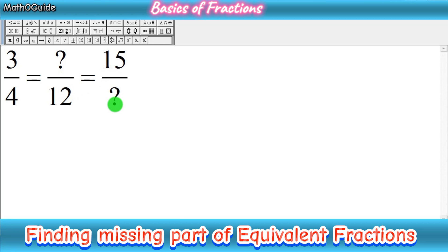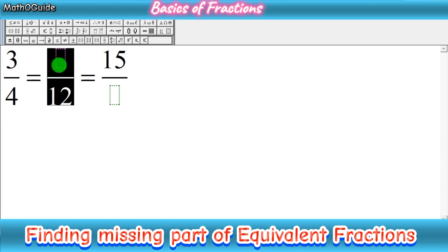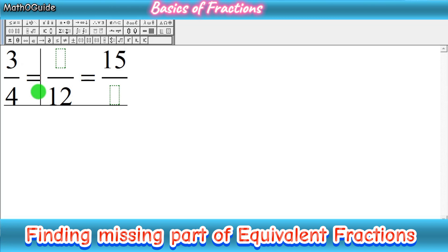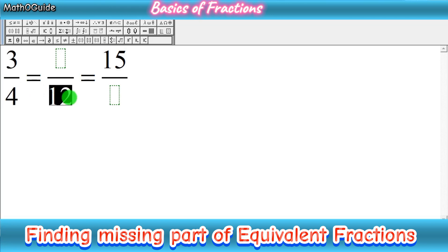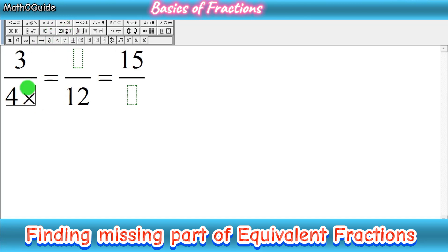The rule is the same — first of all you have to identify which fraction is smaller and complete. The complete fraction here is 3 over 4. Now we want to find the missing numerator in the second fraction. You have to look at the complete fraction and find which parts are complete. Here we have the denominator complete in both fractions: 4 and 12.